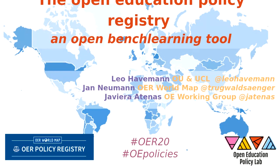I'm also a digital education advisor at UCL, which is why I was very interested in Kate's presentation where she's talking about her use of the ABC learning design, which my colleagues were the original developers of. My name is Jan Neumann and I'm working for HPZ, the North Rhine-Westphalian Library Service Center. We provide digital services for higher education libraries in North Rhine-Westphalia, the biggest state in Germany. I'm Javier Atenas and I co-coordinate the open education working group for Open Knowledge, and I'm an associate researcher at the university in Barcelona.